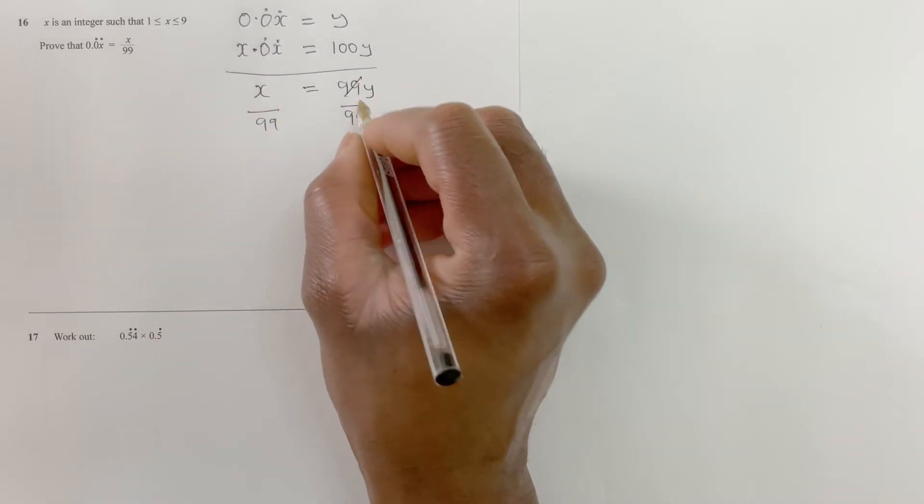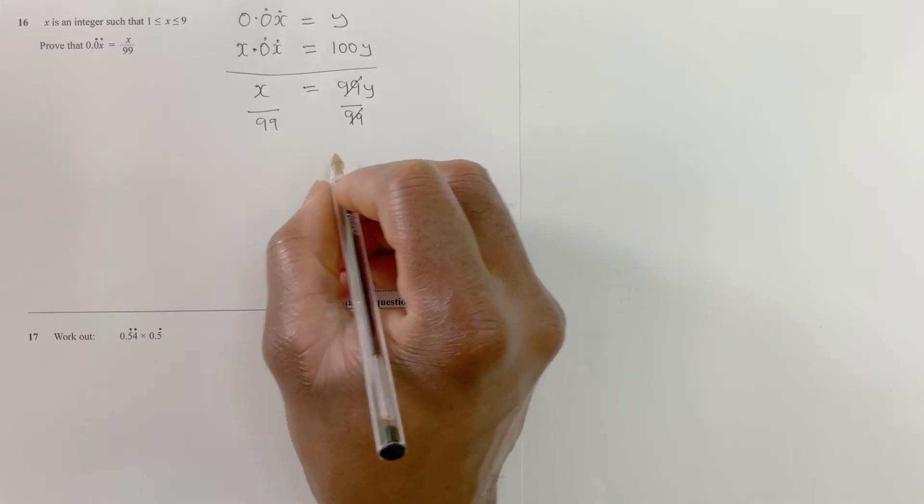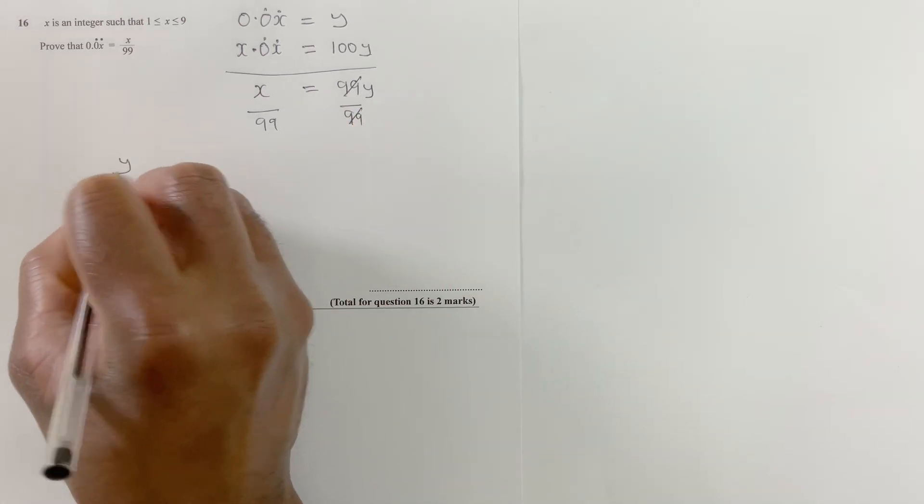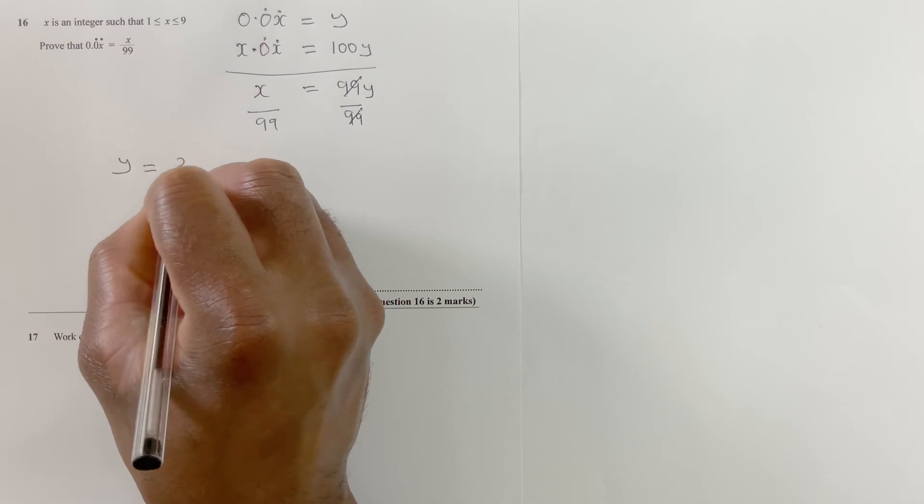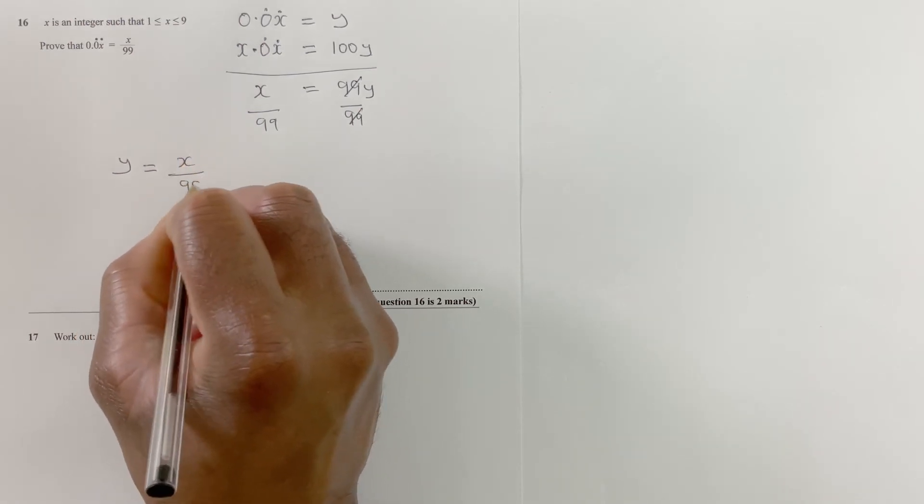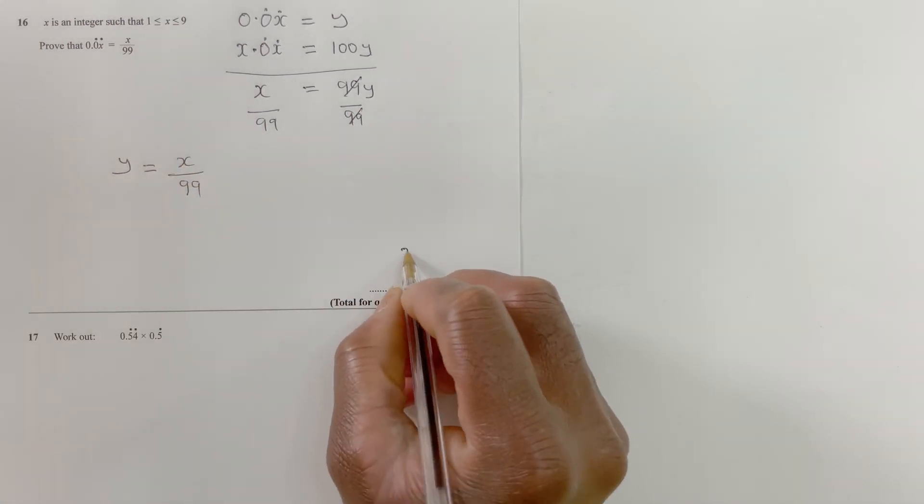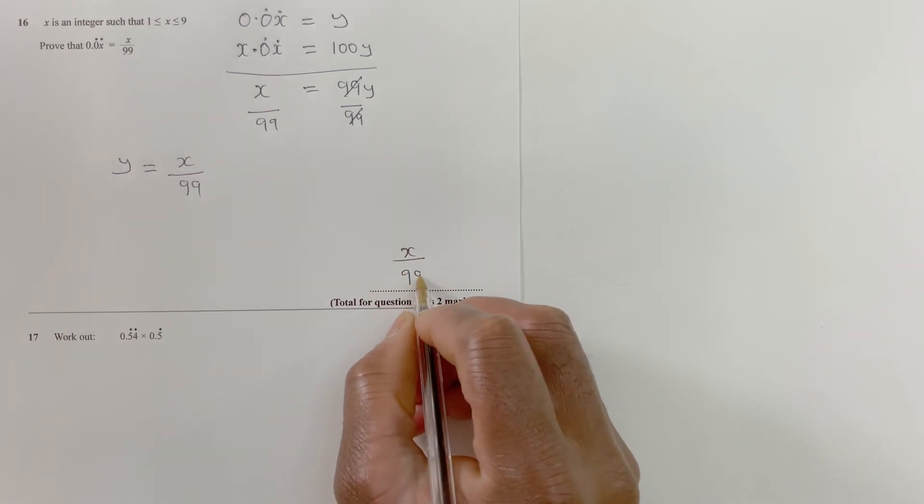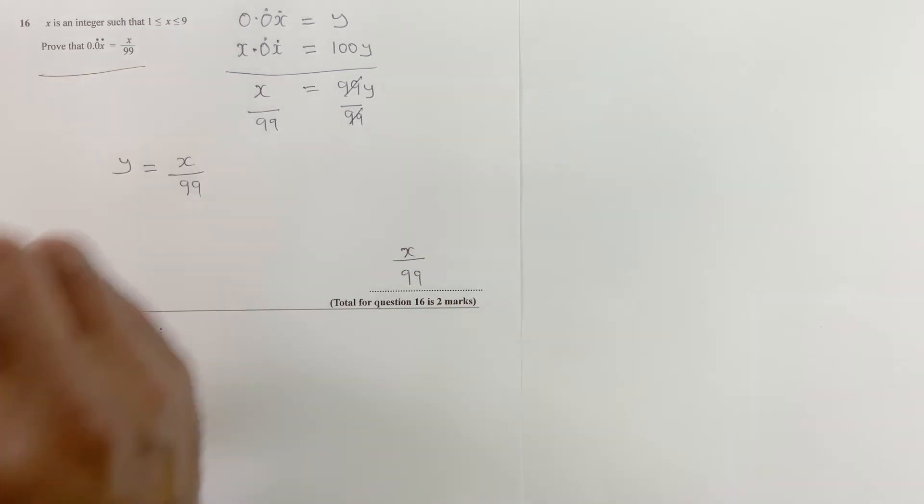Therefore, 99y equals x, so y equals x over 99. The answer is x over 99. That's the proof.